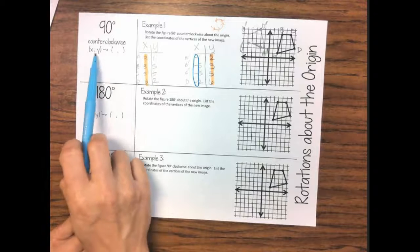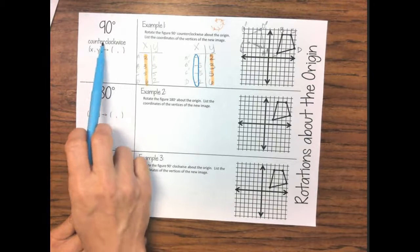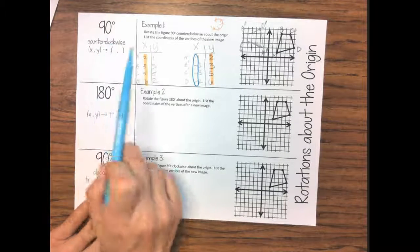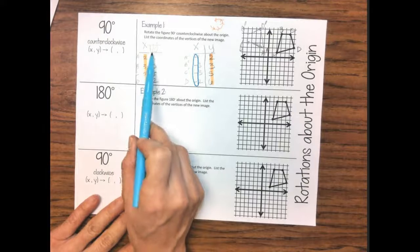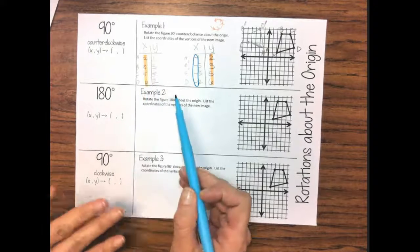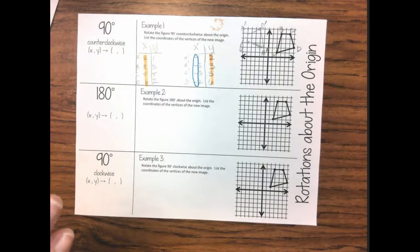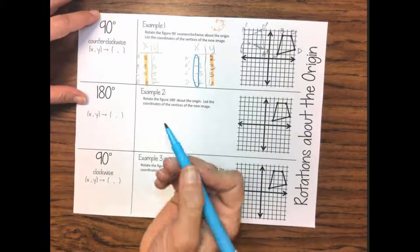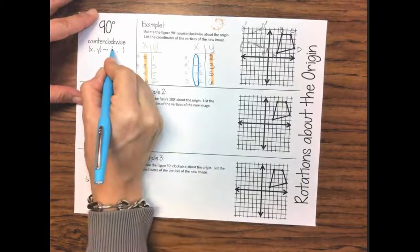So if we were to write a rule right here for counterclockwise, if you notice what the y values were are now in the x column and they are opposite so we're going to put a negative y right there.